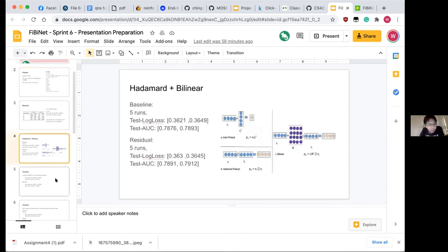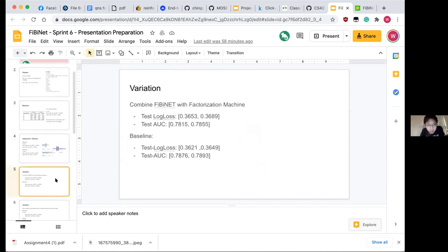I think for the remaining slides, I will let my teammates talk about what they did. Hi, so I also completed another variation. Because in Fibinet, it came out with the idea that replaces the factorization machine with the standard structure. And I explored a little bit of different combinations between the Hadamard products and the linear products.